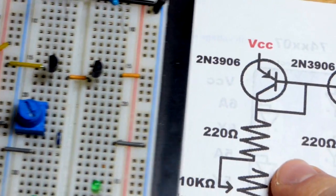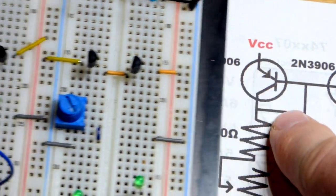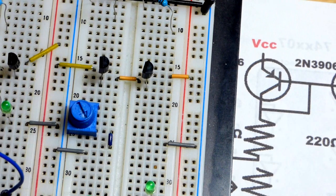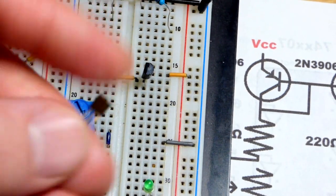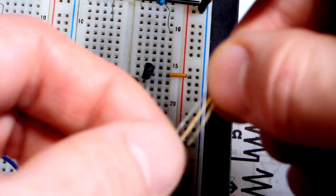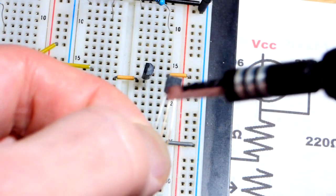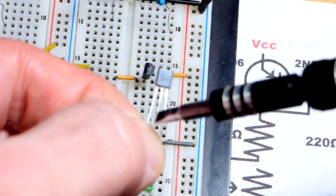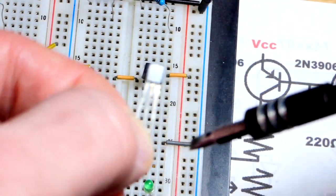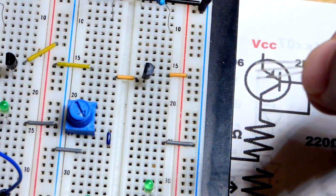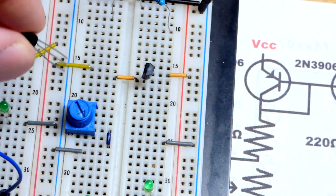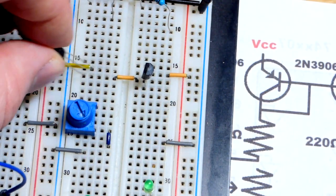We'll zoom in. As I said, these are 2N3906s. The pin layout is the emitter to the left when you're looking at the flat side. Emitter to the left, base to the middle, collector to the right. So if we turn it this way, the emitter will be up top. We're going to do that flat side to the left. That puts the emitter to top.